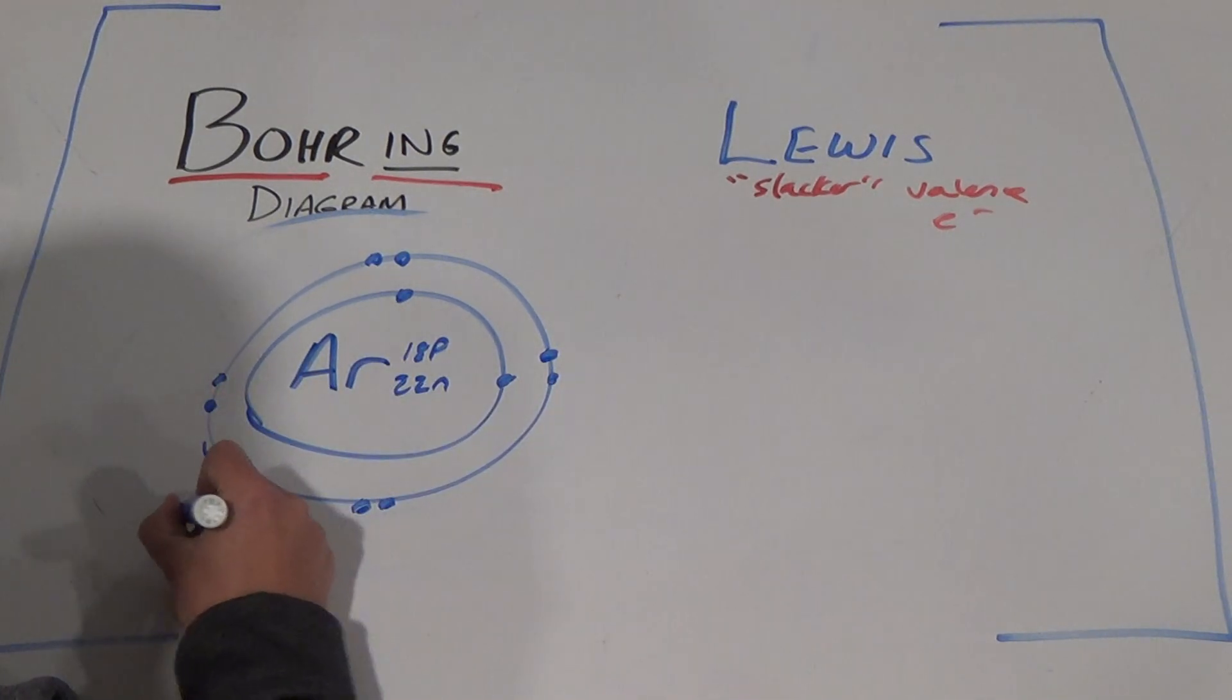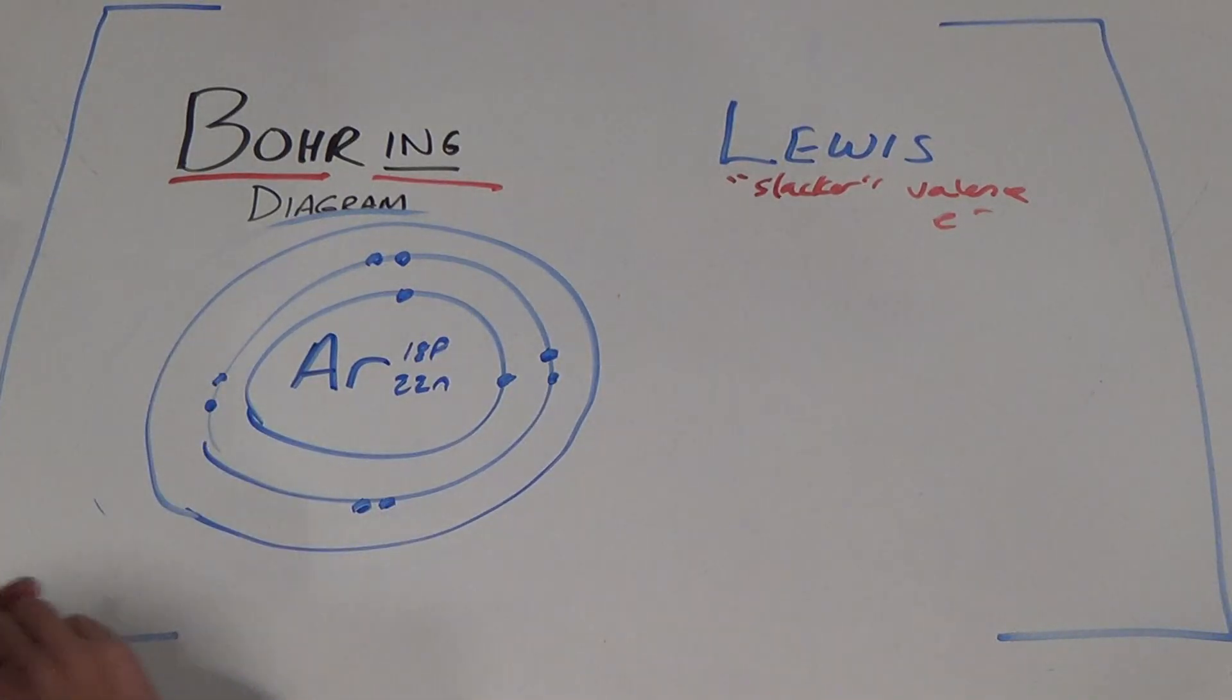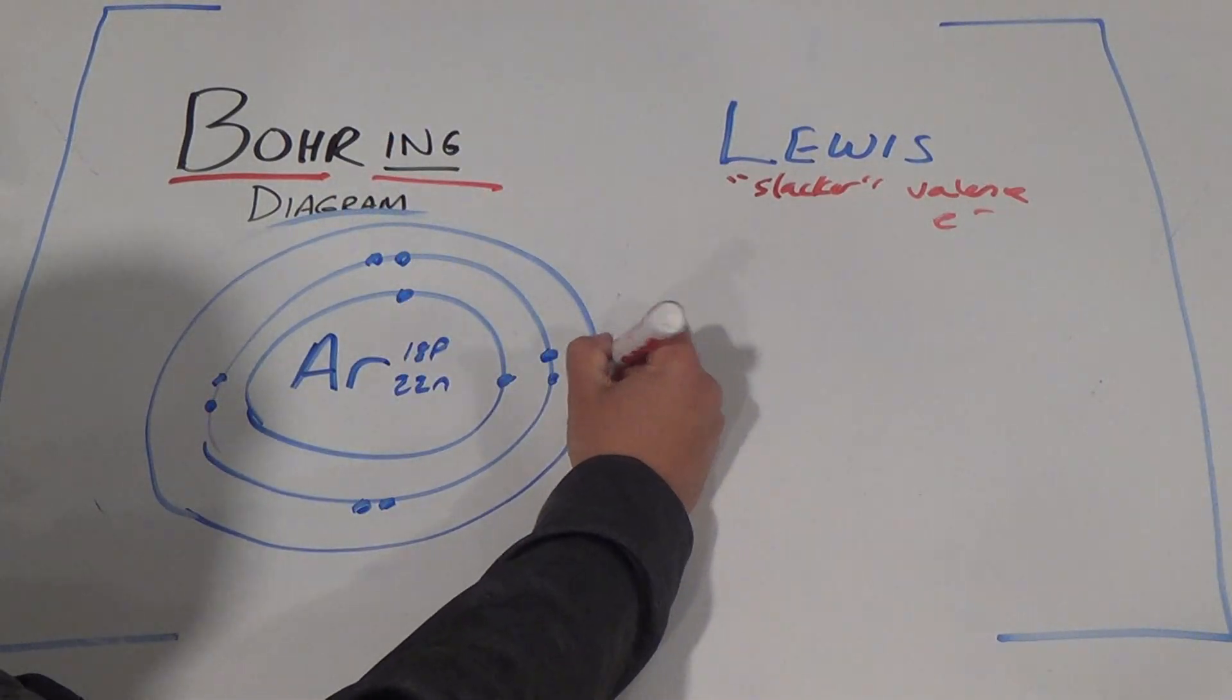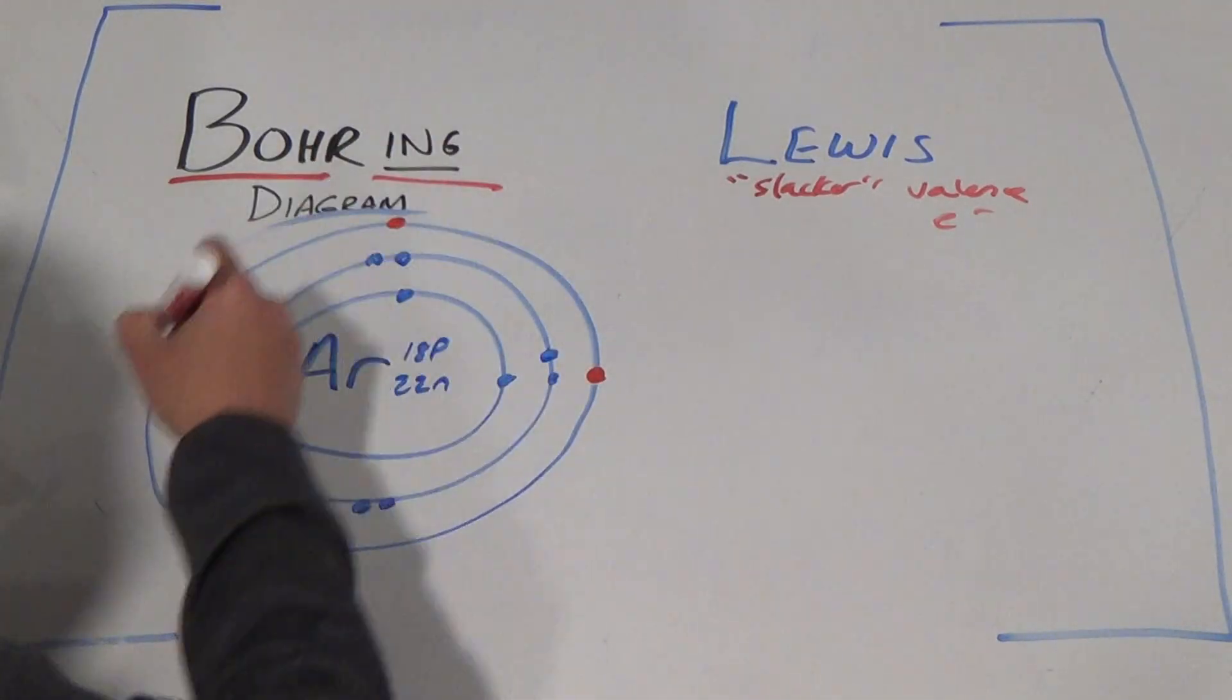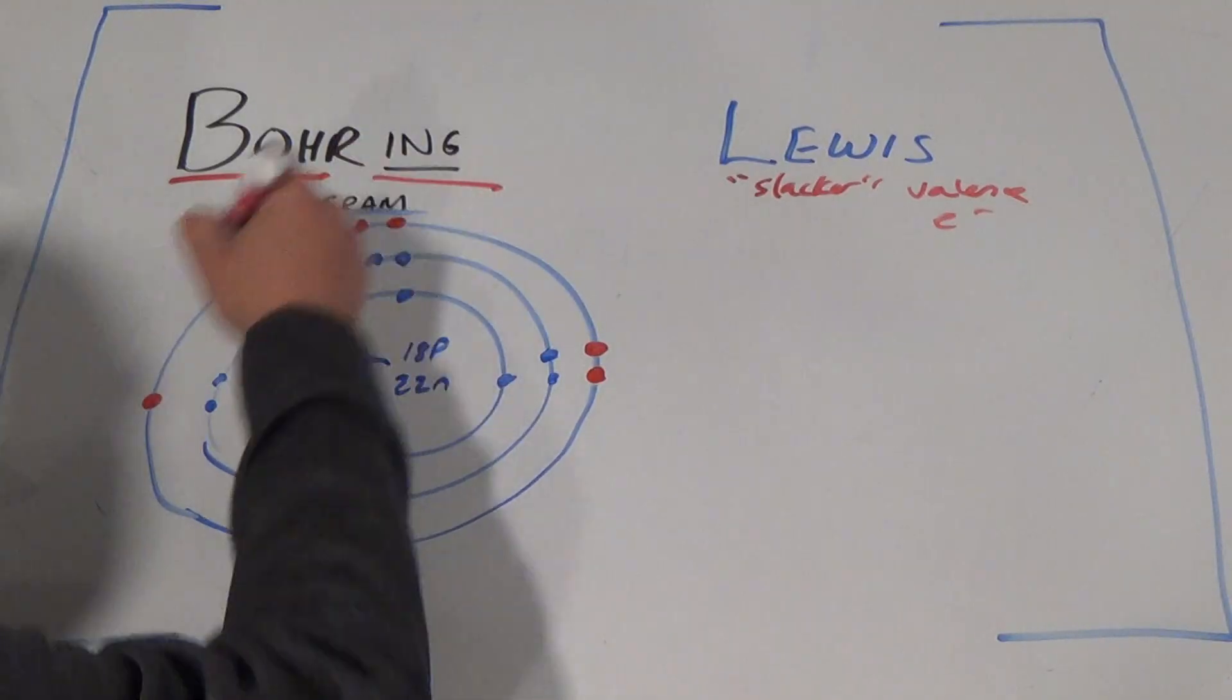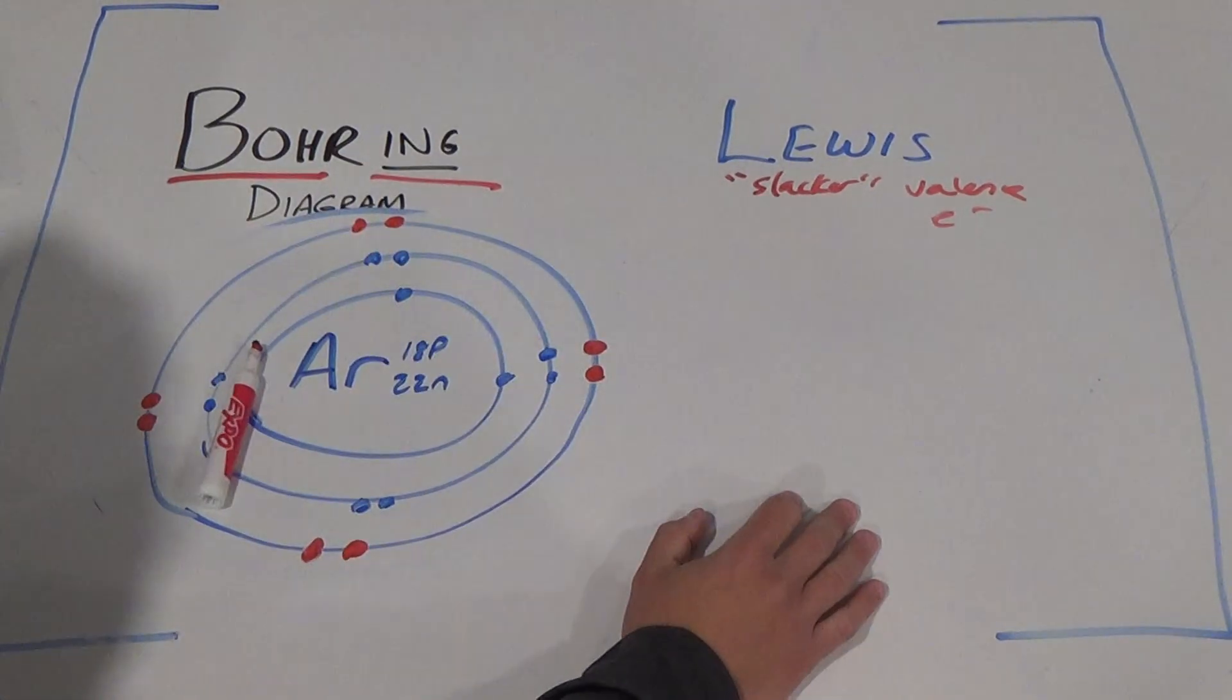Another level, but these are valence electrons. We have eight more to go. One, two, same routine. Three, four, five, six, seven, eight.